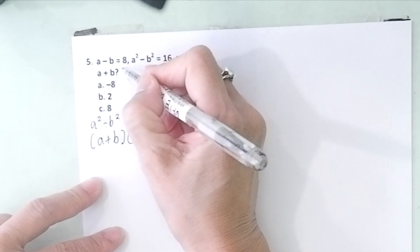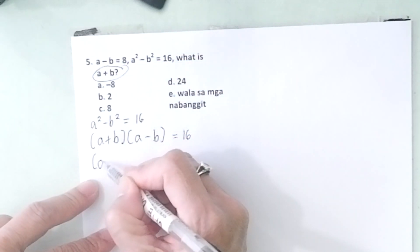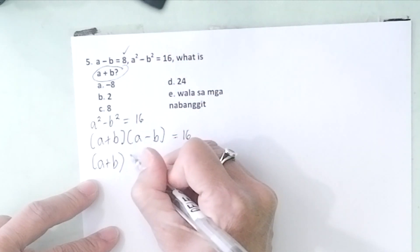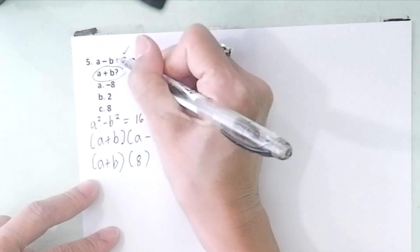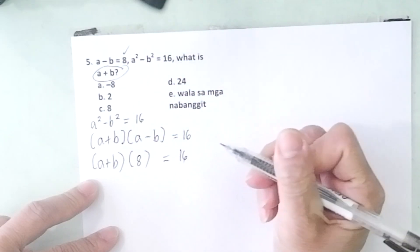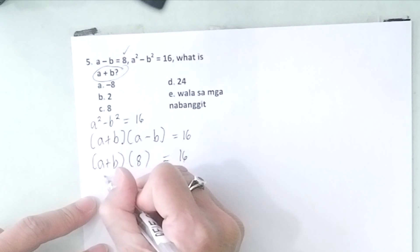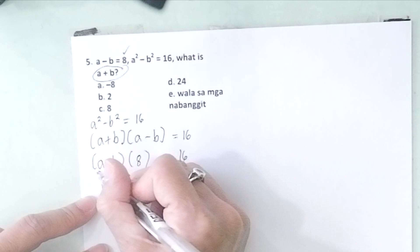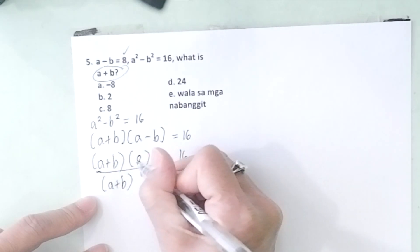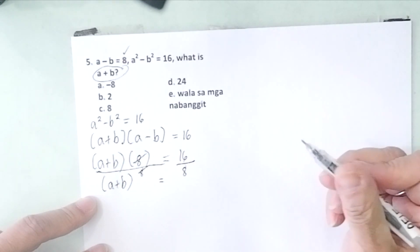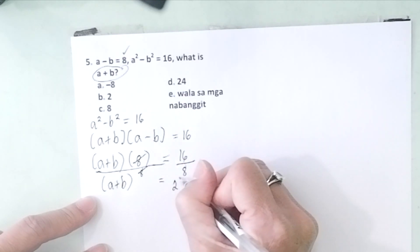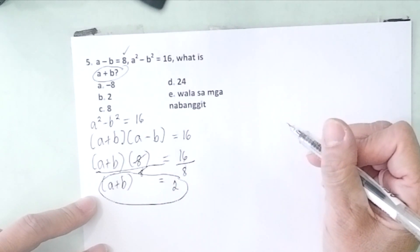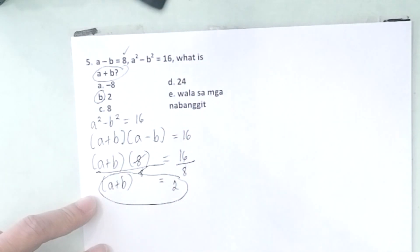Remember that we're looking for a + b, which is this. So retain a + b, and a - b there is equal to 8. So substitute 8 here for a - b equals 16. Then you solve for a + b. You just divide both sides by 8 so that you can cancel this. So a + b equals 16 divided by 8 is 2. So a + b is equal to 2. So the correct answer is letter B.